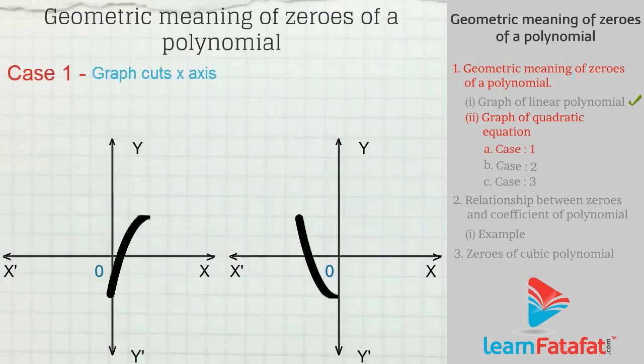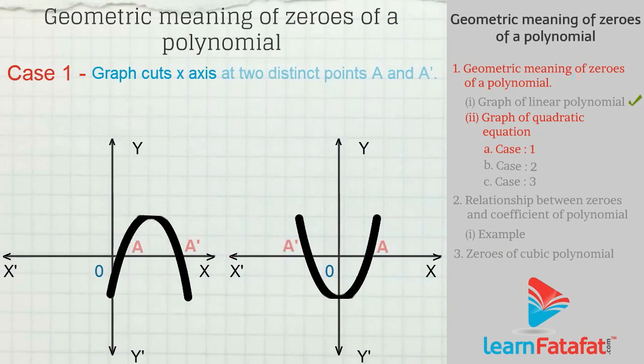Case 1: The graph cuts the x-axis at two distinct points, a and a'. In this case, the polynomial has two zeros, that is, a and a'.